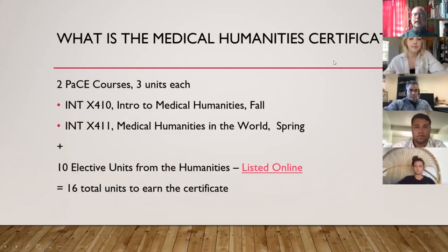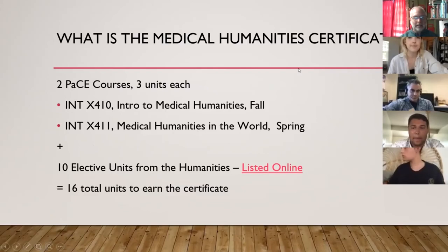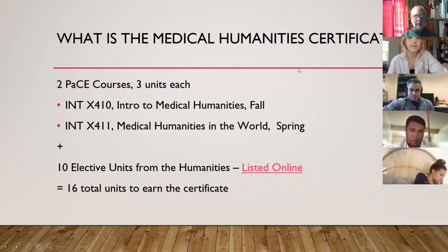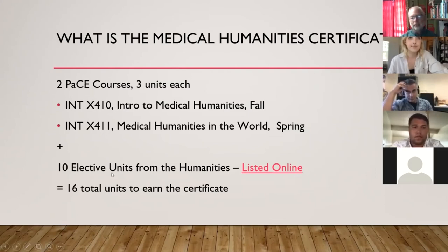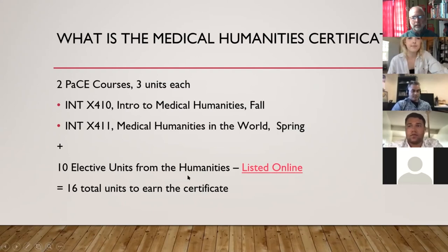The Medical Humanities certificate is a brainchild of Dr. Brustowski, born about two years ago and launched last fall. You need two PACE courses — INT 410 and 411 — offered in fall and spring. Two courses, six units with PACE, then another 10 units chosen from an electives list. There are 30 to 40 different humanities classes to pick from, totaling 16 units to earn the certificate.